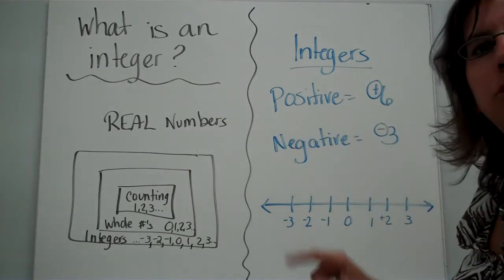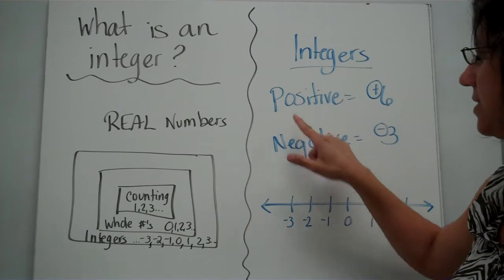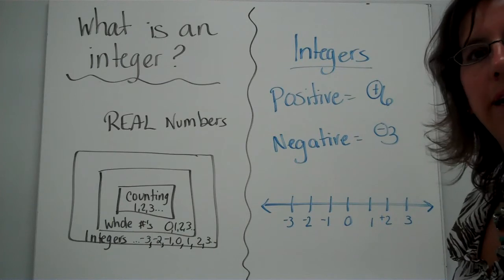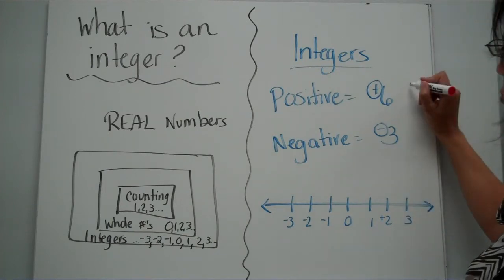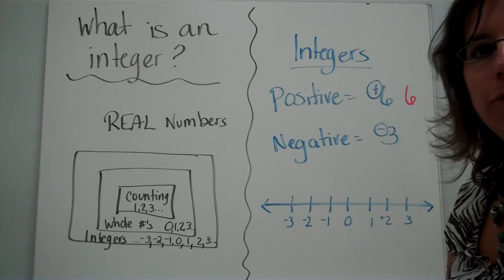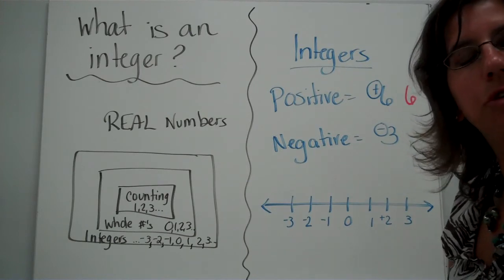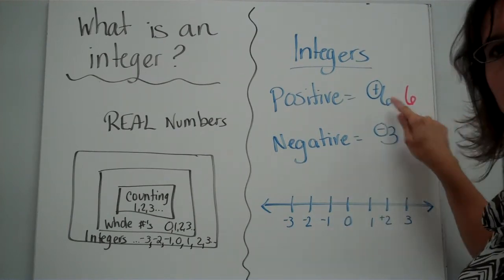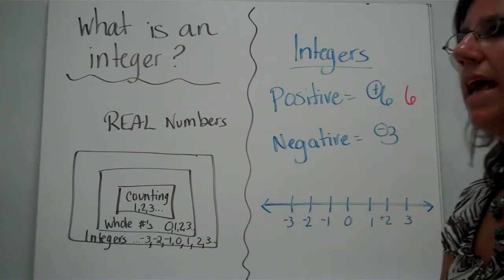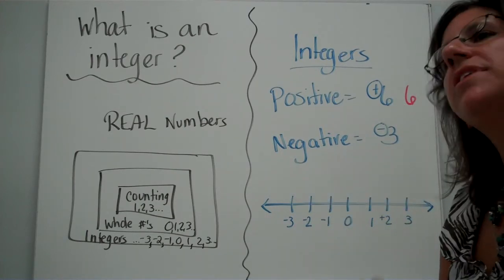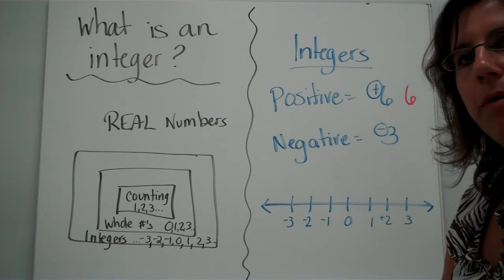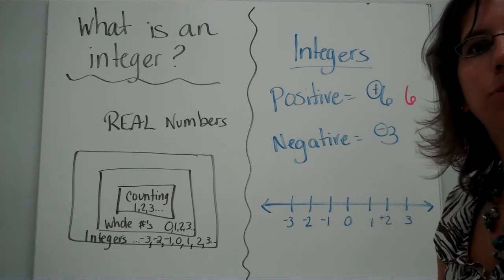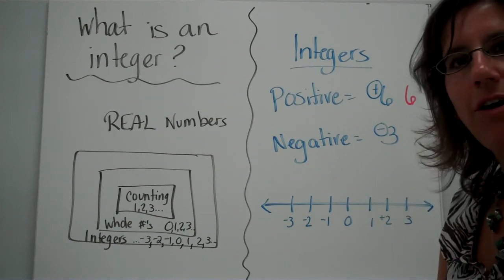Integers — there are different ways that you can describe a number. You could say that it's positive or you could say that it's negative. When you have a positive number, sometimes you see the little plus sign in front, and sometimes you don't — you just see a plain six. Both of those represent a positive six. You have $6 in your pocket, or it's six degrees outside. Positive can have a symbol or it doesn't have to. Negative numbers have to have the little sign in front. A negative three means you owe somebody $3, or it's three degrees below zero.